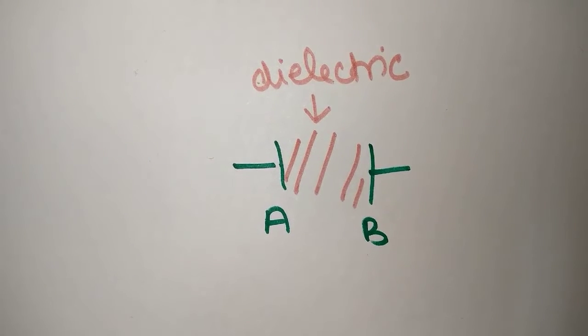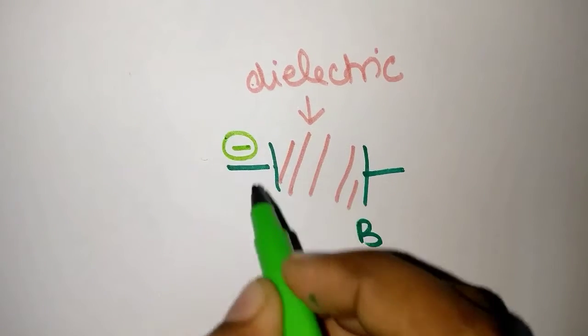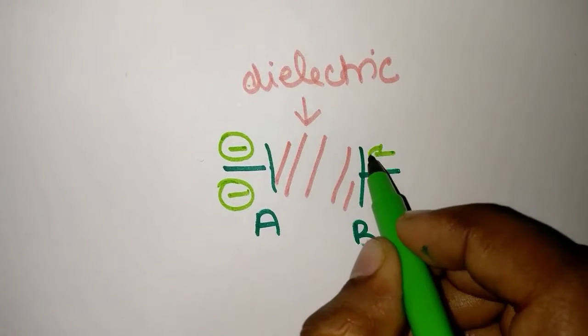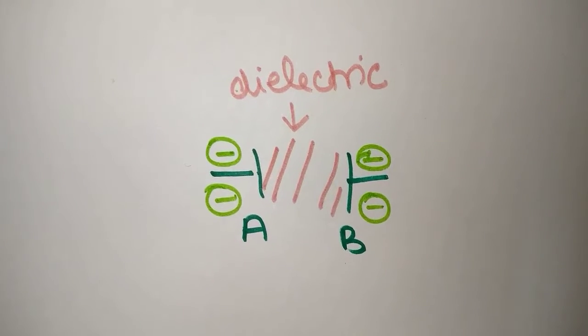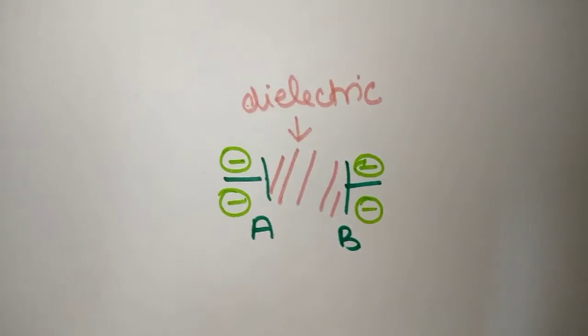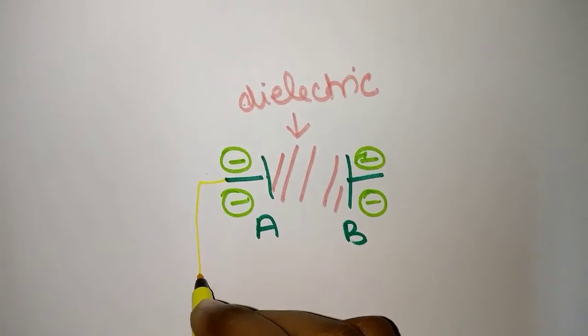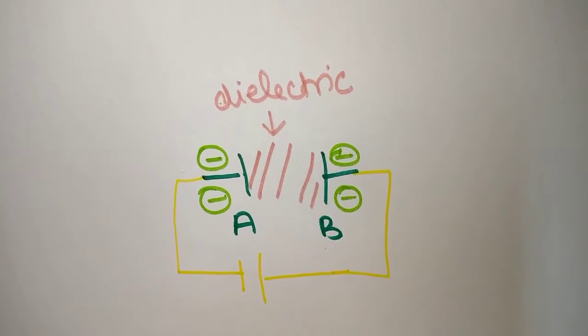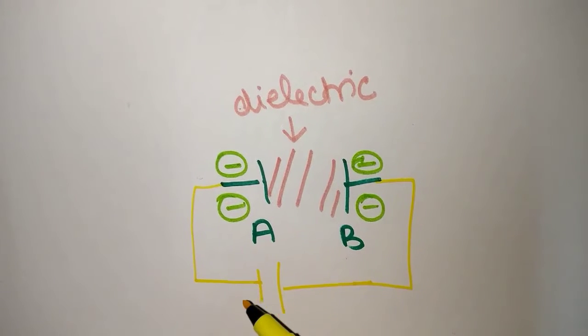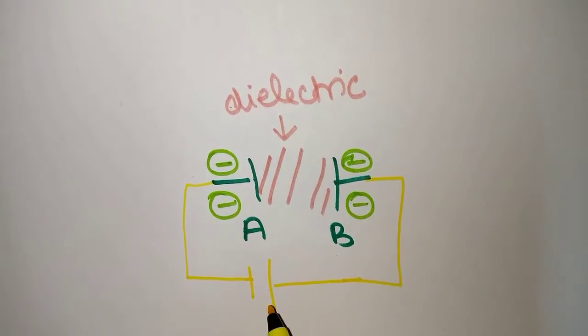Initially plate A and plate B will have electrons. When connected across a battery in the following manner, the electrons tend to flow from negative terminal to positive terminal.